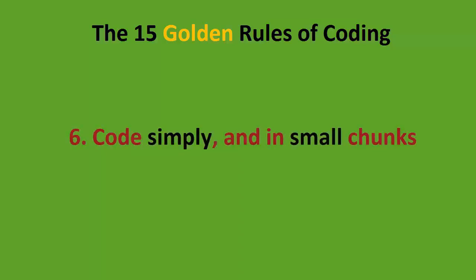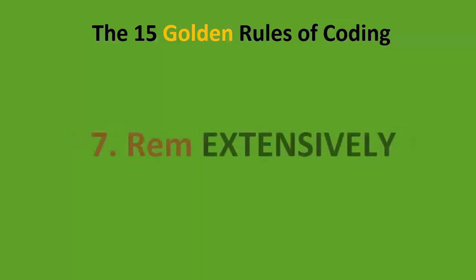Number six: code simply and in small chunks. Although it's going to be tempting to write 10,000 lines of code, if something goes wrong it's going to be a nightmare to debug and find where the error is. I highly suggest you code simply and in small chunks — just write a little bit of code, make sure that works, and then progress.